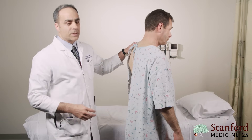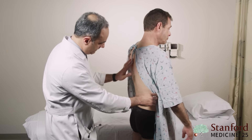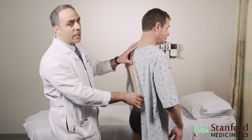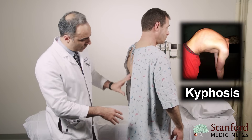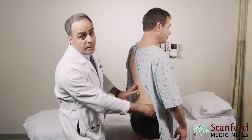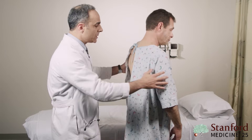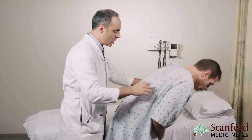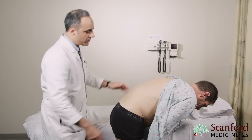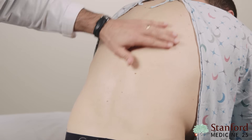First thing you want to notice is the contour of the spine, focusing on any kyphosis or lack of lumbar lordosis, as those can contribute to low back pain. Next, you'll have the patient bend over, looking for any scoliosis, in which case you will notice that one side of the spine may be raised in comparison to the other side.